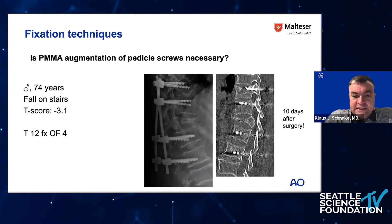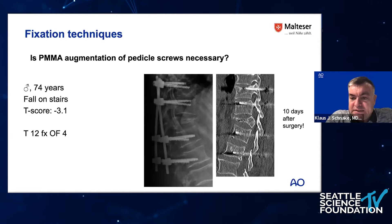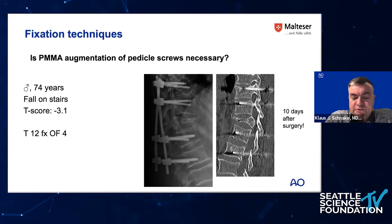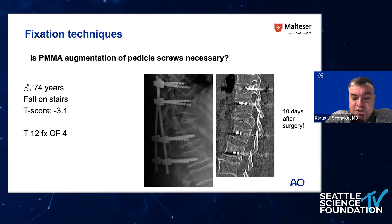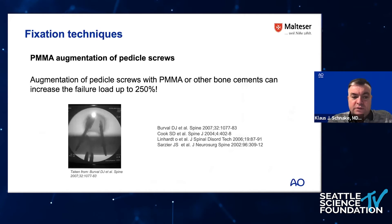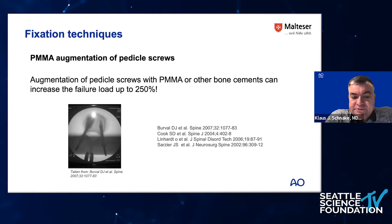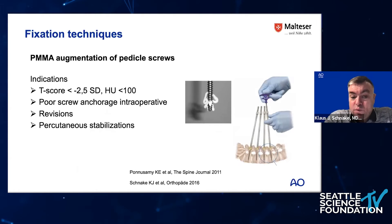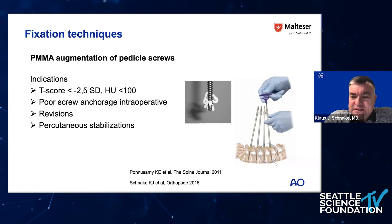The question is whether PMMA augmentation of pedicle screws is necessary and meaningful. Here is an example of a 74-year-old with a T-score below minus 3 — everything below minus 3 should keep you alert — with an AO type O4 fracture affecting both end plates at T12. She received percutaneous screw stabilization with eight screws, but already 10 days after surgery there was visible screw cut-out. Augmentation of pedicle screws with PMMA or similar bone cements can increase the failure load by up to 250 percent.